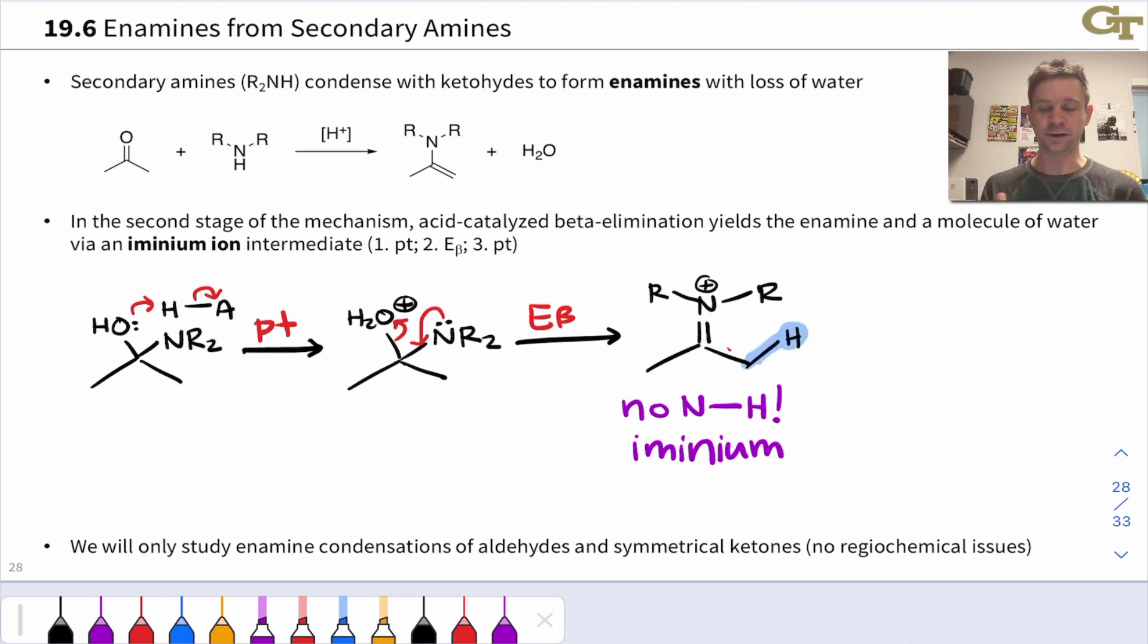Without that NH, the most acidic hydrogen in this structure is alpha to the CN double bond, linked to a carbon directly adjacent to the CN double bond. Removal of this proton highlighted in blue is what's going to lead us to the final product.